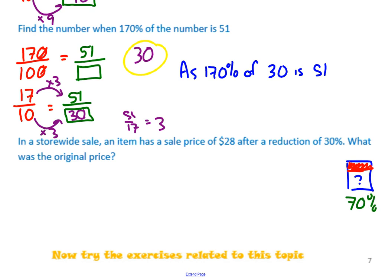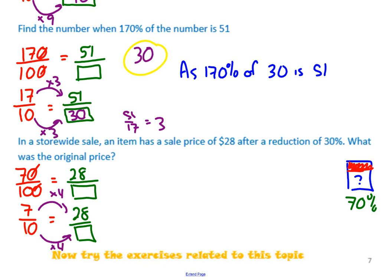So 70% is what $28 represents, because it's what percentage is left behind after the reduction of 30%. So 70% over 100 equals 28 over our mystery number. And then you can simplify your fraction. So you would get 7 over 10 by dividing the top and bottom by 10 equals 28 over our mystery number. And that's an easy one to see what you multiply by. Multiply by 4. Multiply by 4. 10 times 4 is 40. So what was the original price? We need units for this one. It was $40.